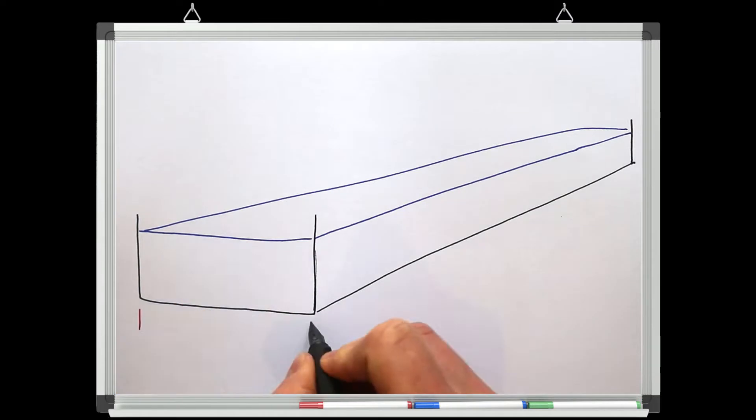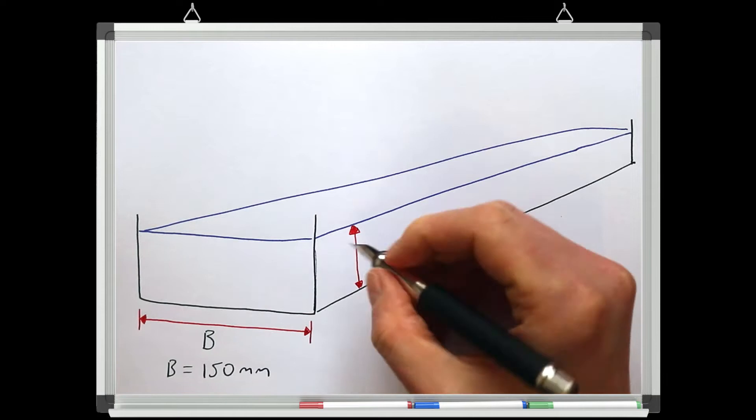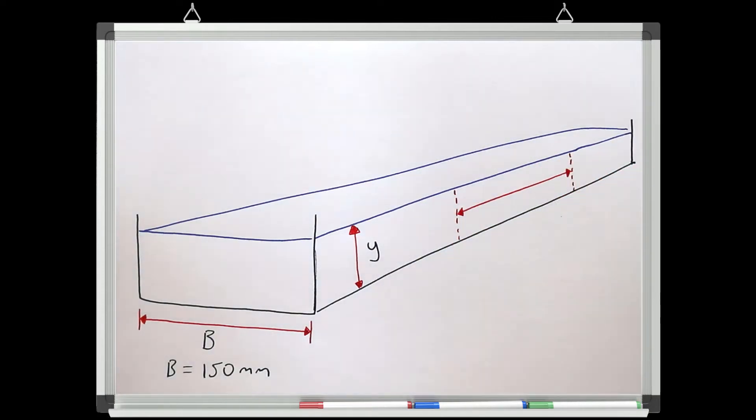My flume is 150 millimeters wide and we're going to call its width B. We'll also call the depth of water in the flume Y and lengths along the longitudinal axis X.